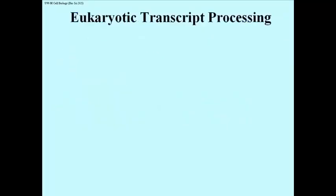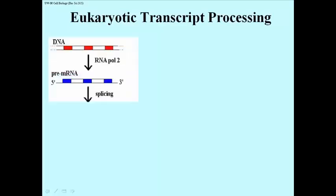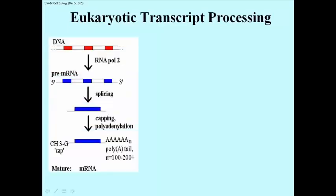So let's take a look at a summary of the different kinds of transcript processing. It turns out that mRNA are encoded by split genes — that is, genes that have introns and exons — so the transcript that is made from DNA, shown here with red blocks, is a pre-messenger RNA that then needs to be processed by splicing.